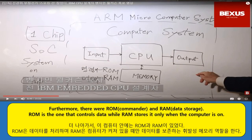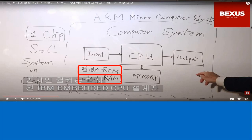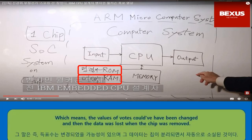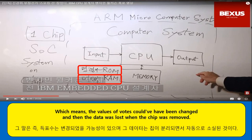Furthermore, there were a REM commander and REM data storage. REM is the one that controls data, while the other REM stores it only when the controls are active. This means the values of both could have been changed, and then the data was lost when the chip was removed.